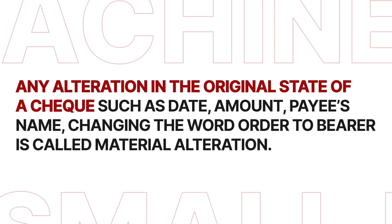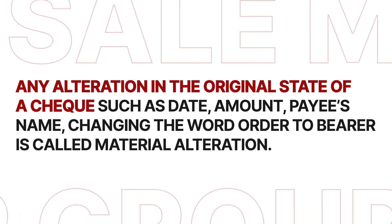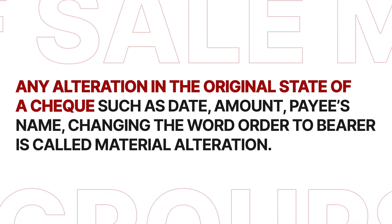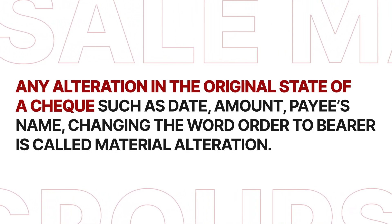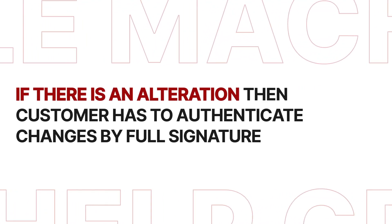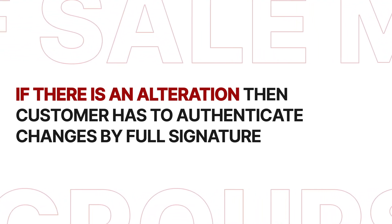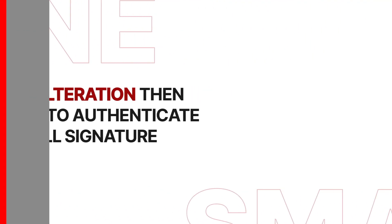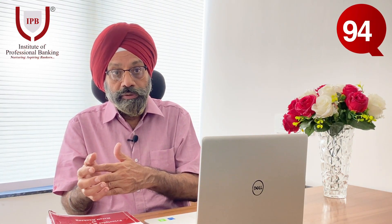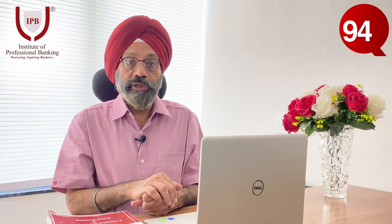No alteration should have been made — for example, a month written and then cut and changed to three years. If there is such a change, it is called a material alteration. If the amount changed or the name of the payee changed, we call it material alteration. If there is an alteration, we will ask the customer to authenticate it by signing where it was changed with a full signature, and then we will make the payment. However, if it is a third-party check and there is an alteration in it, we will not make the payment.